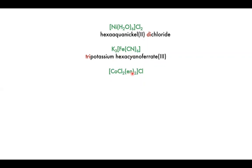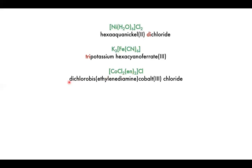Here we have a cobalt complex. We've got a single chloride outside as an outer sphere ligand for charge balancing. Inside the square brackets, we have cobalt, two chloro ligands with minus one charge each, and two ethylenediamine ligands — a neutral bidentate ligand. So the name is dichlorobis(ethylenediamine)cobalt(III) chloride. It's 'dichloro' for the two chlorides. It's 'bis' rather than 'di' ethylenediamine because 'di' already appears in the ligand name — this is the instance when we use 'bis' instead of 'di'. Then cobalt(III), then chloride outside to balance the charge.